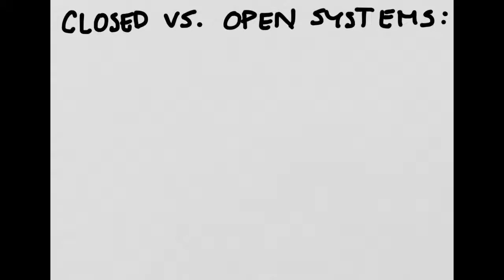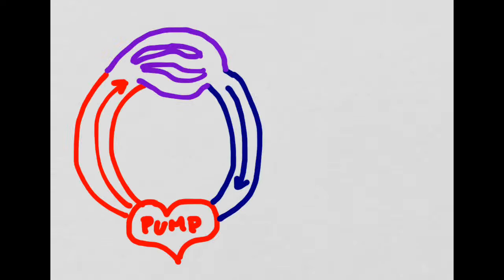There are two major classes of circulatory systems, and we call them closed and open circulatory systems. This is a basic diagram of what we call a closed circulatory system, and it has a couple of different parts, some of which you're pretty familiar with. Closed circulatory systems have a pump, which pumps the blood throughout the system, and it also has closed blood vessels, which keep all of the blood inside them rather than releasing it out into an open space.